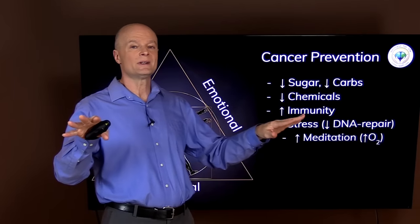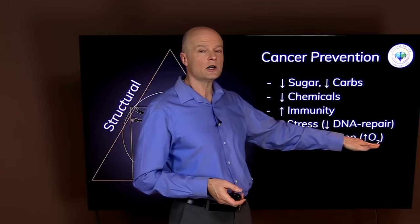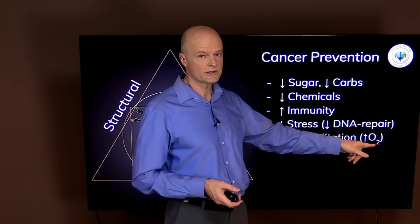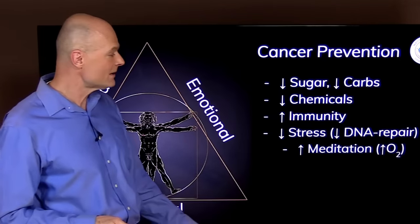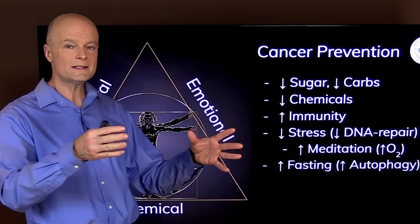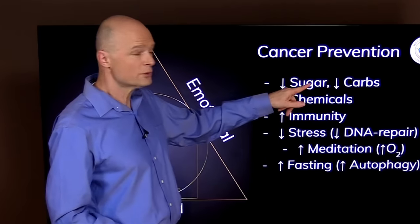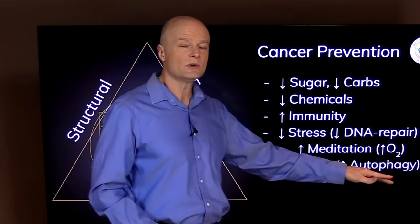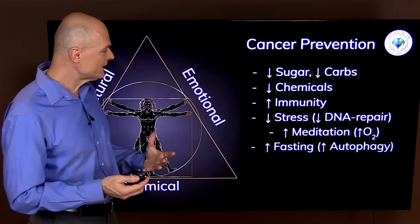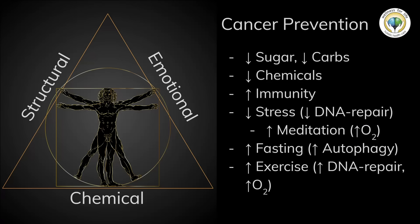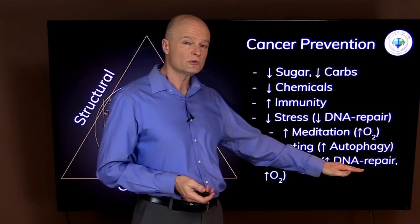You want to do your best to improve immunity. Sugar will destroy immunity, so by cutting out the sugar you've already improved your immunity. But you want to understand that immunity is part of all of these three sides: the structural, emotional, and chemical. You want to try to reduce stress because stress is a state where your body is focused on the outside, and immunity is where the body is focused inside. When you have a lot of stress, that will reduce your DNA repair. If you do a breathing exercise and/or meditation, then you will improve your parasympathetic function, reduce the stress, but you also increase your peripheral vasodilation. So you improve the oxygenation of your tissues, and cancer hates oxygen. It loves sugar and hates oxygen.